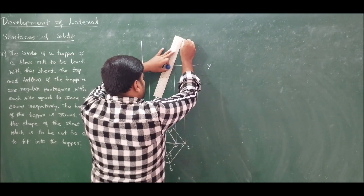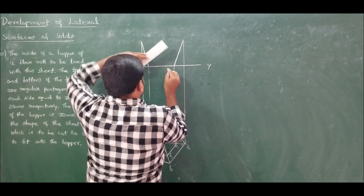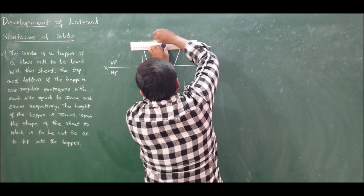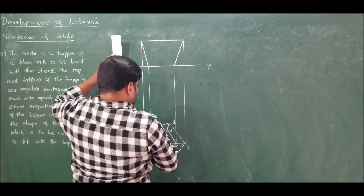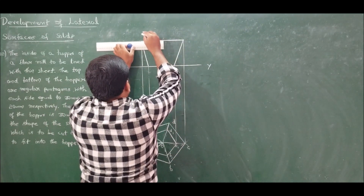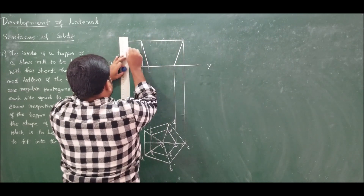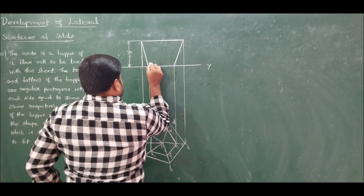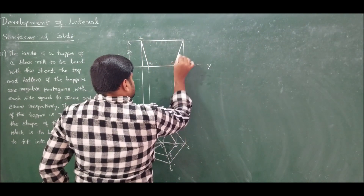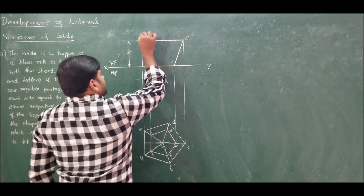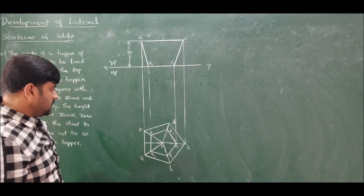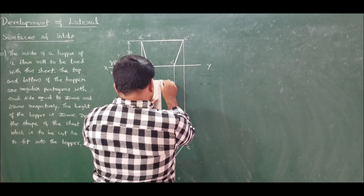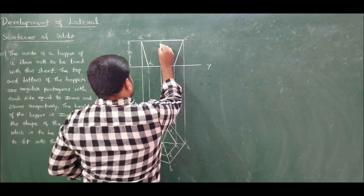This gives us the required frustum hopper in the front view. The height of the frustum is 30 mm. Now we want the axis of this pyramid. From the center, draw a line to identify the axis and project it. Let the relevant edge be called A1A, and the front view projections be labeled accordingly.